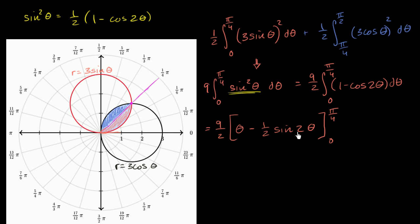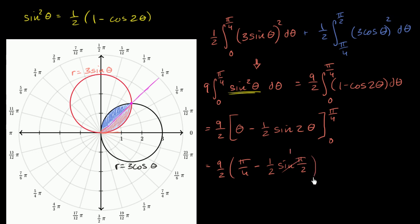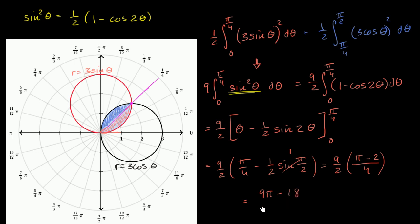We evaluate this from zero to pi over four. Evaluating at zero gives zero, so we only need to evaluate at pi over four. That gives nine halves times pi over four minus one half times sine of two times pi over four, which is sine of pi over two, which equals one. So we get nine halves times pi over four minus one half, or pi over four minus two over four. Multiplying everything out, this equals nine pi minus 18, over eight. And we are done.